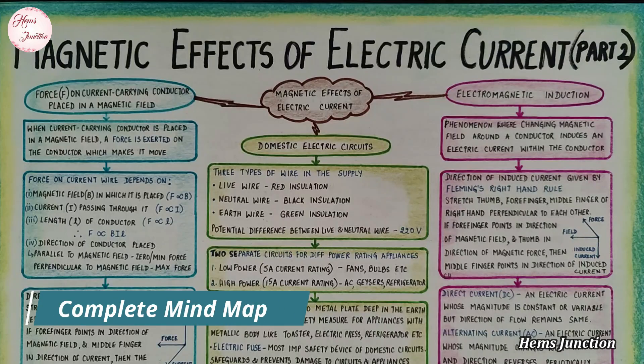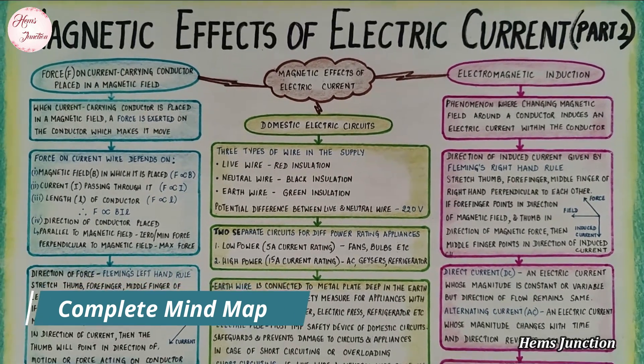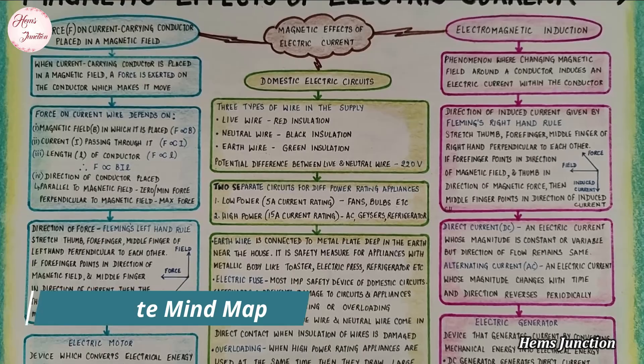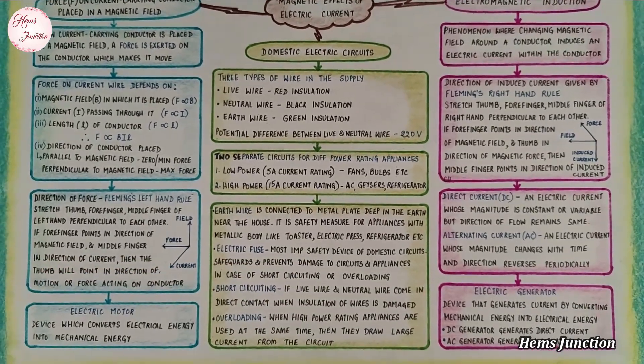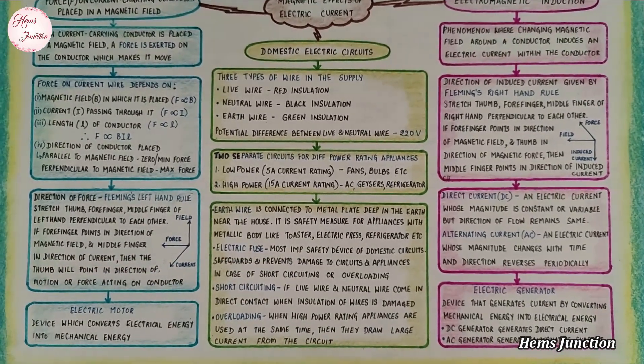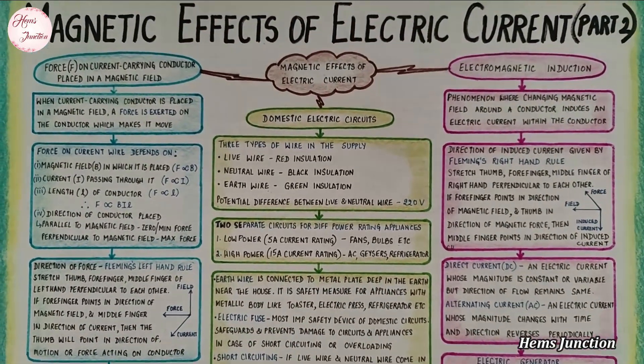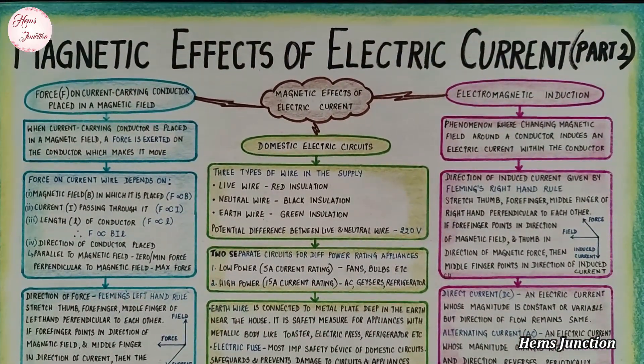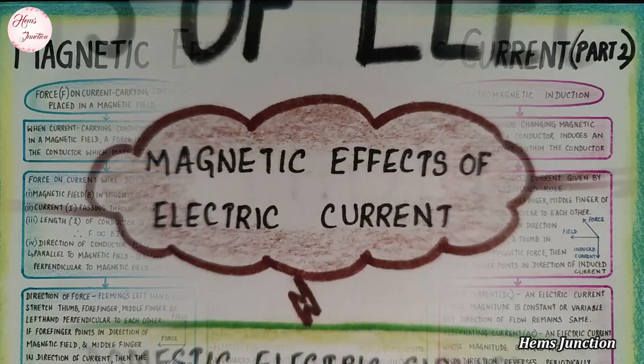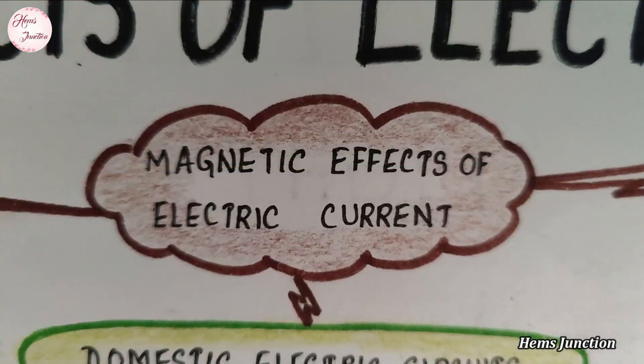Here is the complete mind map of the chapter, Magnetic Effects of Electric Current, Part 2. Let's have an overview of the mind map first.